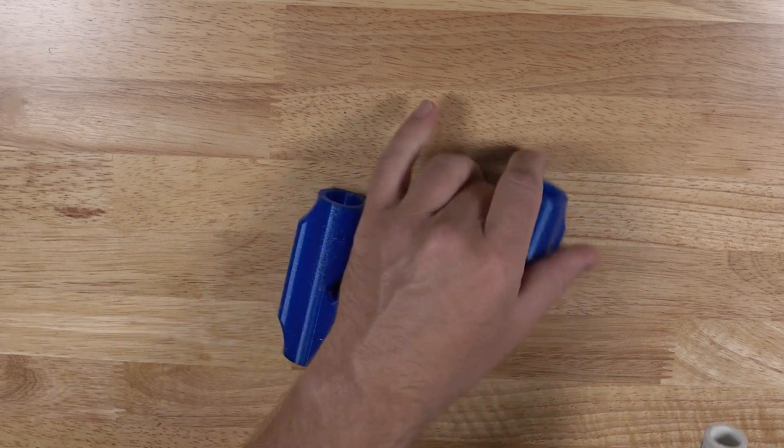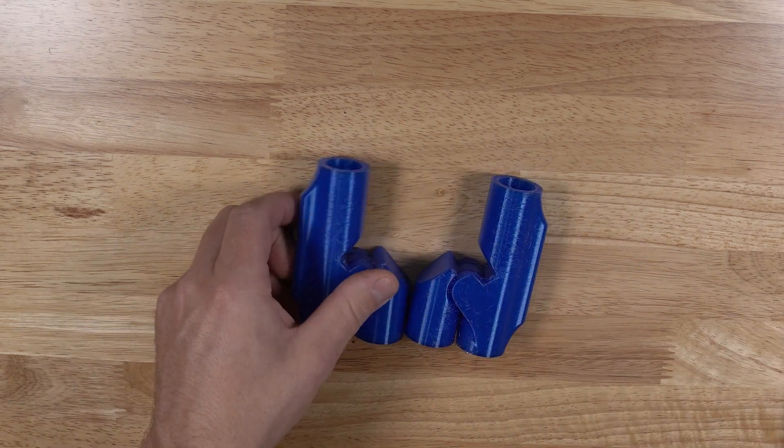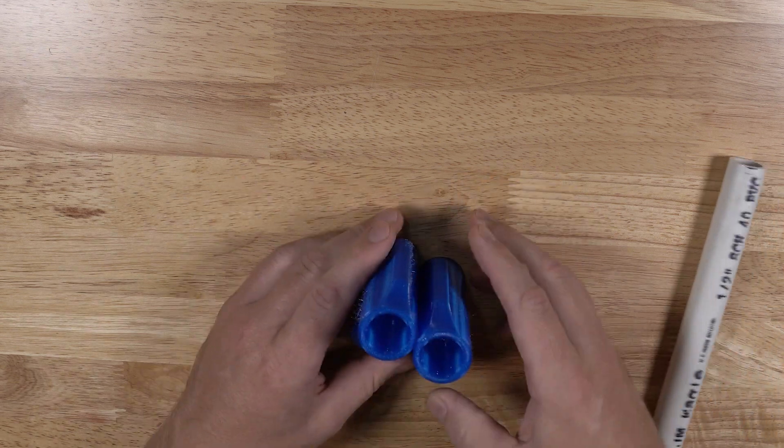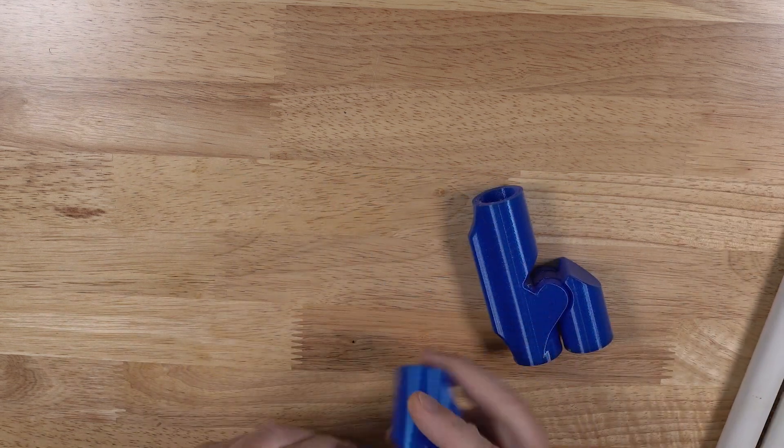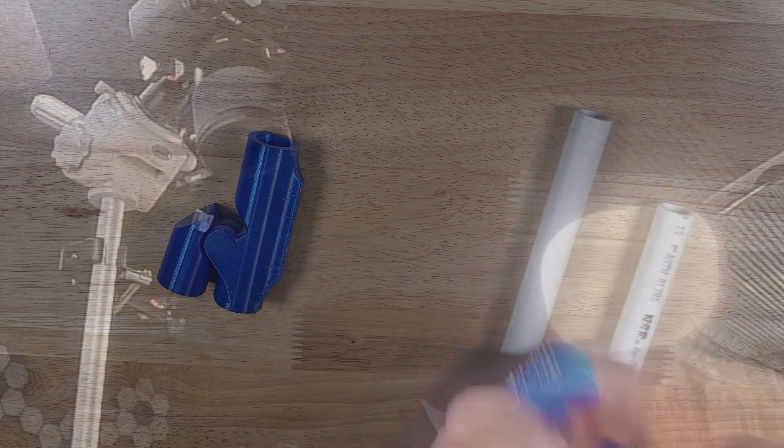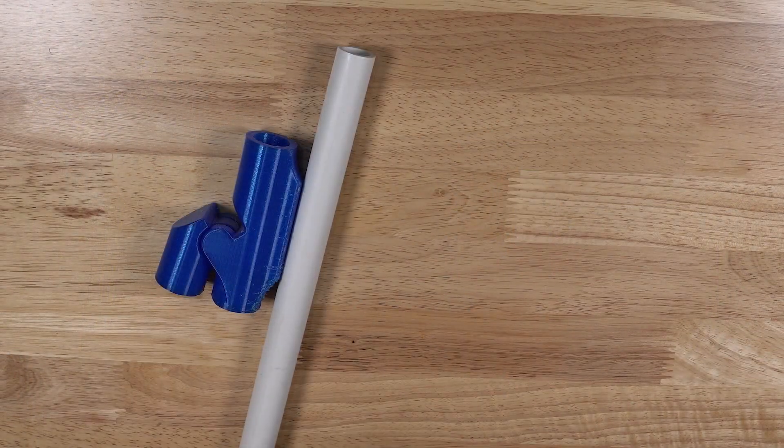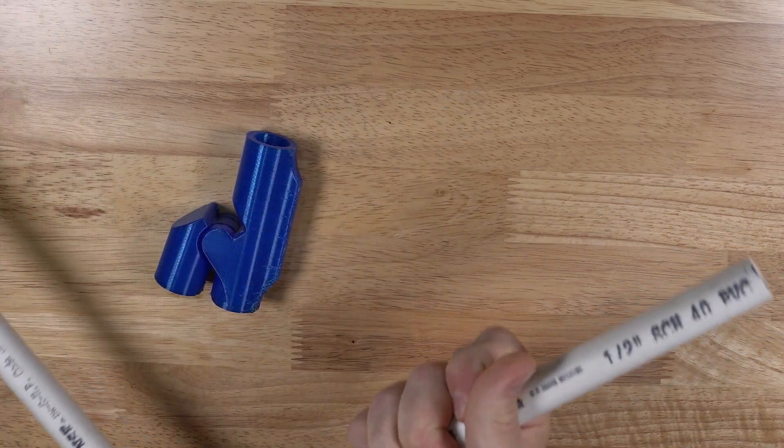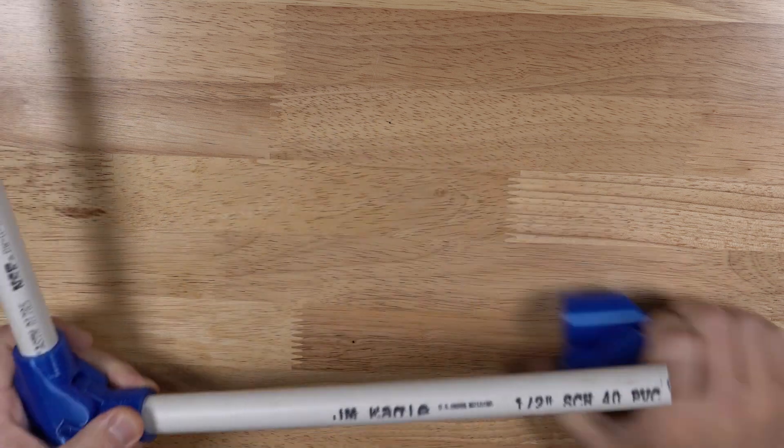These are really nice for building race gates and they have three different sizes: one for half, three quarter, and one inch PVC pipe. These ones here are for the half inch. They print in place like so with a live hinge on them. You just kind of break them apart like that and then you can make yourself a race gate.